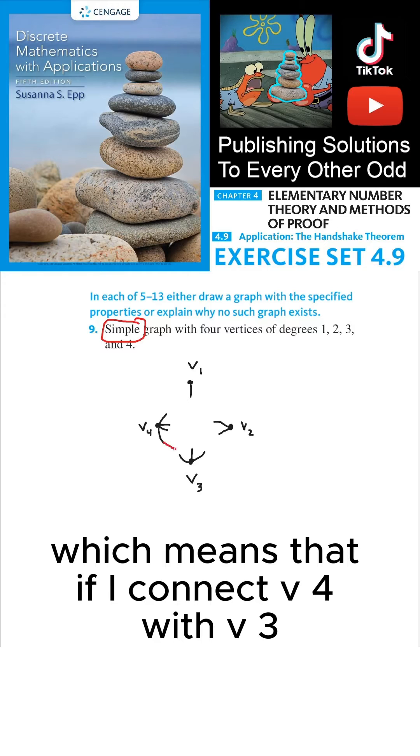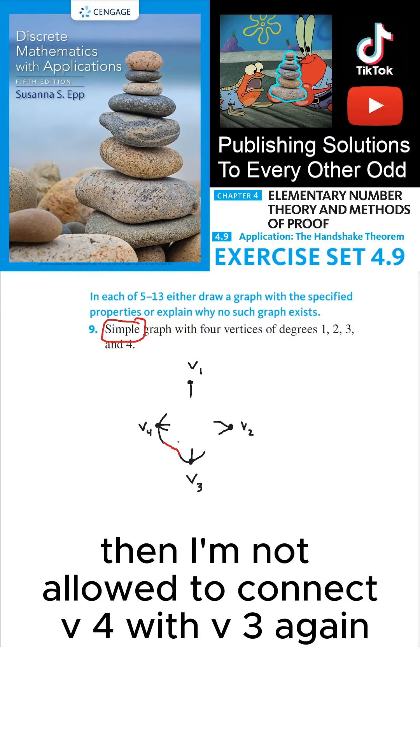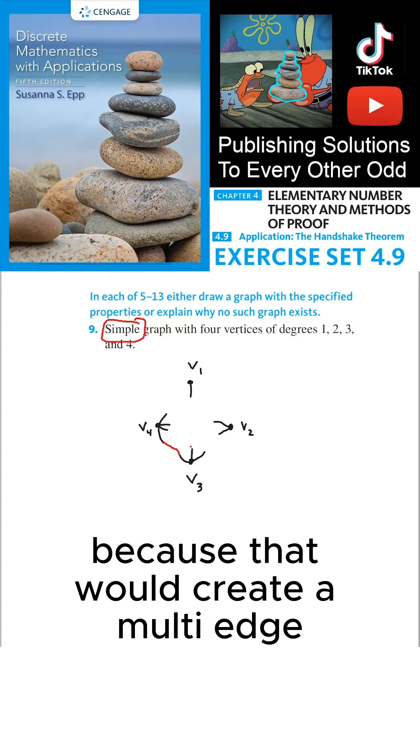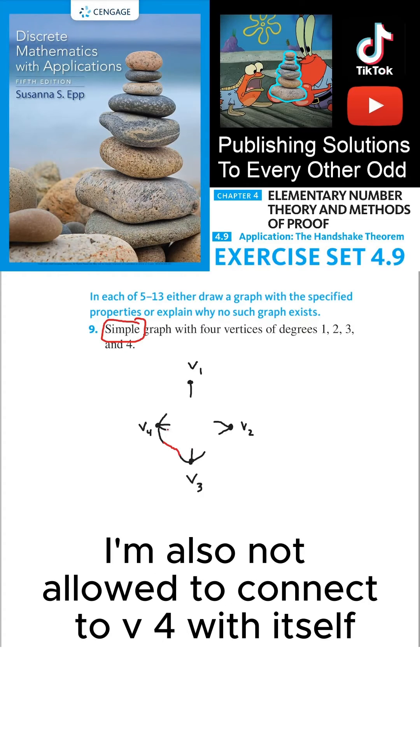Which means that if I connect V4 with V3, then I'm not allowed to connect V4 with V3 again, because that would create a multi-edge. I'm also not allowed to connect V4 with itself.